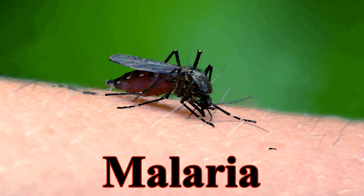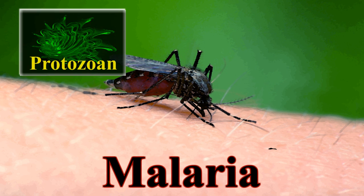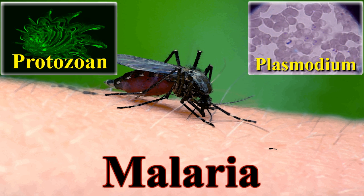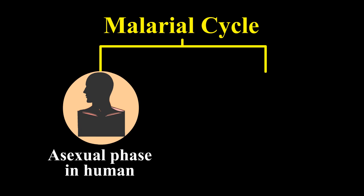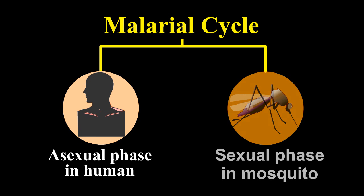Malaria is a mosquito-borne disease caused by the protozoan Plasmodium. The malarial cycle consists of an asexual phase and a sexual phase.